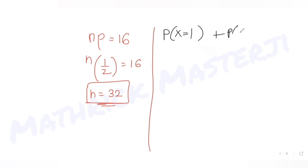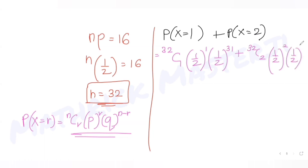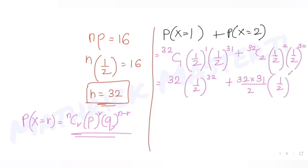The question asks for P(X=1) + P(X=2). Using the binomial formula P(X=r) = nCr · p^r · q^(n−r): P(X=1) = 32C1 · (1/2)^1 · (1/2)^31, and P(X=2) = 32C2 · (1/2)^2 · (1/2)^30. This gives 32 · (1/2)^32 + (32·31/2) · (1/2)^30.